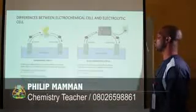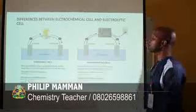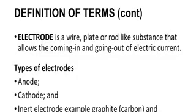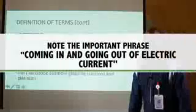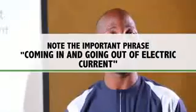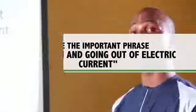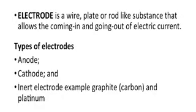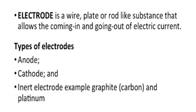There are many other differences between the electrolytic cell and the electrochemical cell. The electrode is a wire-like, rod-like, or plate-like substance that allows the coming in and going out of electric current. The exam bodies are more comfortable with the use of 'coming in and going out.' There are three basic types of electrodes: the anode, the cathode, and the inert electrode. The inert electrode is inactive and does not participate during electrolysis. The most common inert electrodes are graphite, which is carbon, and platinum.